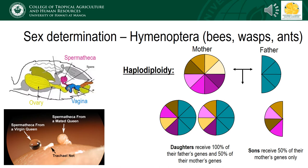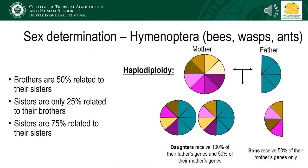This means that a son receives 100% of his genes from his mother, which represents 50% of her total genes, and thus has no father. A daughter, on the other hand, still receives 50% of her genes from her mother and father, and thus has twice as many genes as her brothers. Unlike in humans, relatedness between siblings is also different. Brothers share 50% of their genes with their sisters, since all of the brothers' genes came from the mother, though it represents only 50% of the genes the mother had to give. Sisters are only 25% related to their brothers, though they are 75% related to each other. For the purposes of this class, you will not be expected to calculate the math behind this, but take a moment to review the colors in the pie charts above to help wrap your head around why this breaks down the way it does.